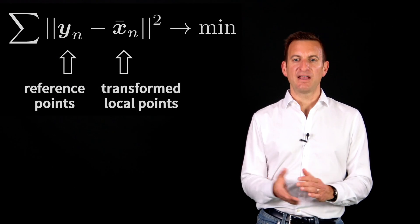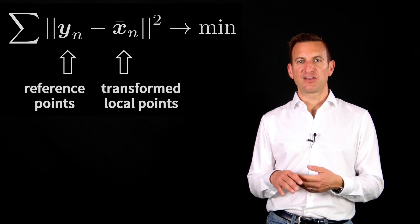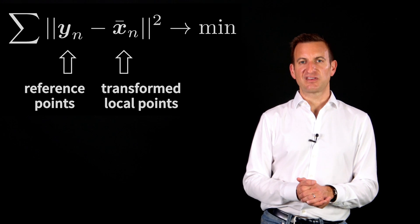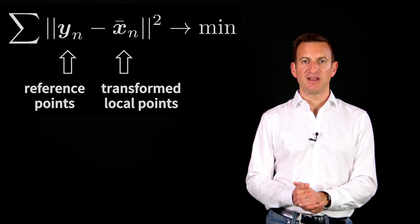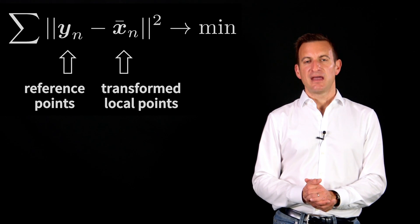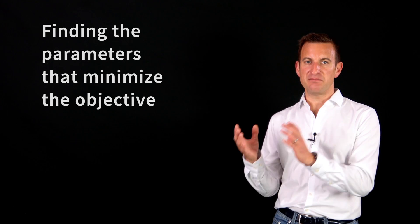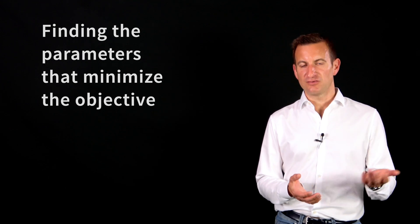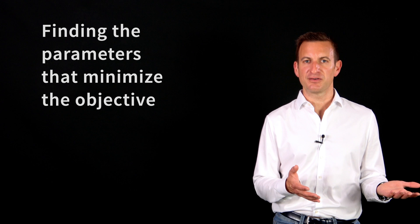So how do we do that? What we need to do is we need to minimize our objective function. So we can expand the term x-bar, so the transform point set, a bit further, and then this objective function looks slightly more complex, but in the end it's not very difficult. And then we need to actually minimize this objective function, finding the parameter that minimizes this function. And this is fairly easy for the translation parameter and fairly easy for the scale parameter. We just compute the first derivatives,